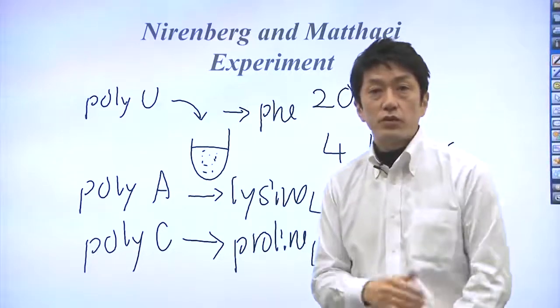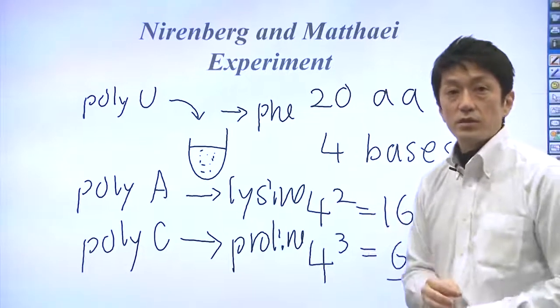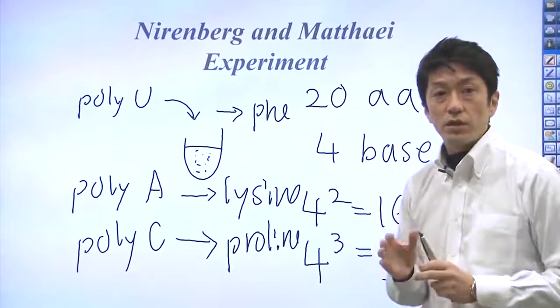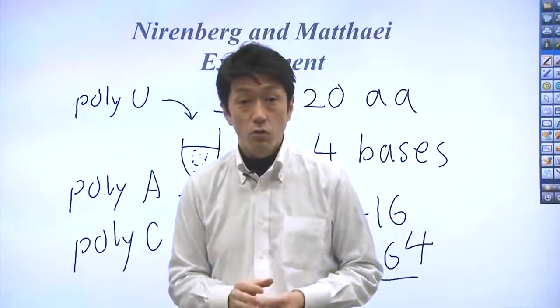This discovery triggered a series of findings concerning genetic codes. These findings were summarized into the theory that each amino acid can be expressed by a 3 nucleotide RNA code.